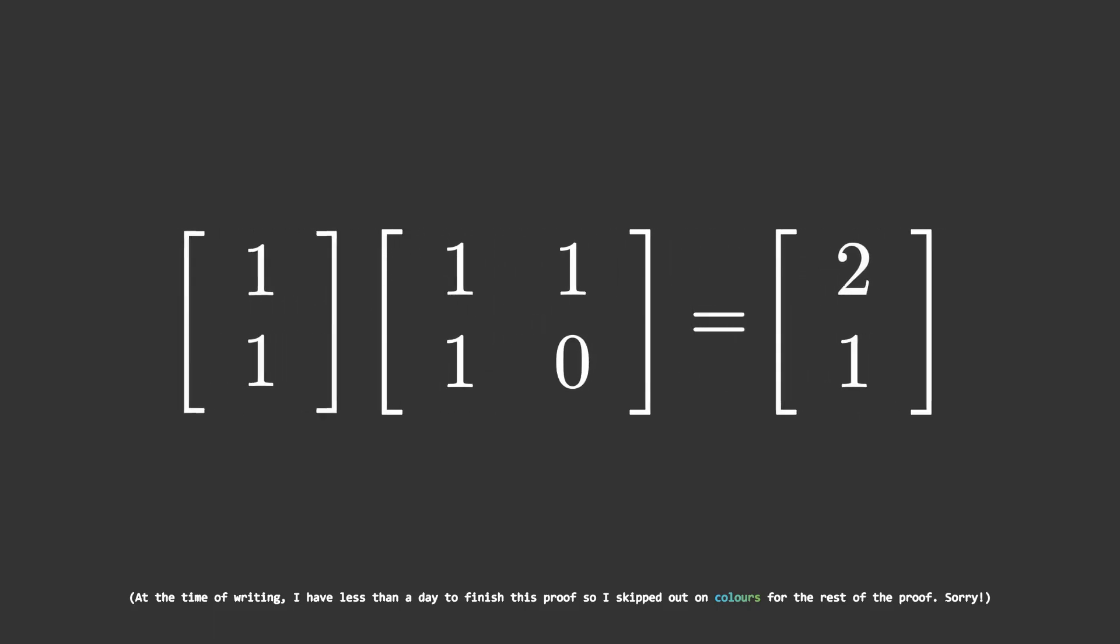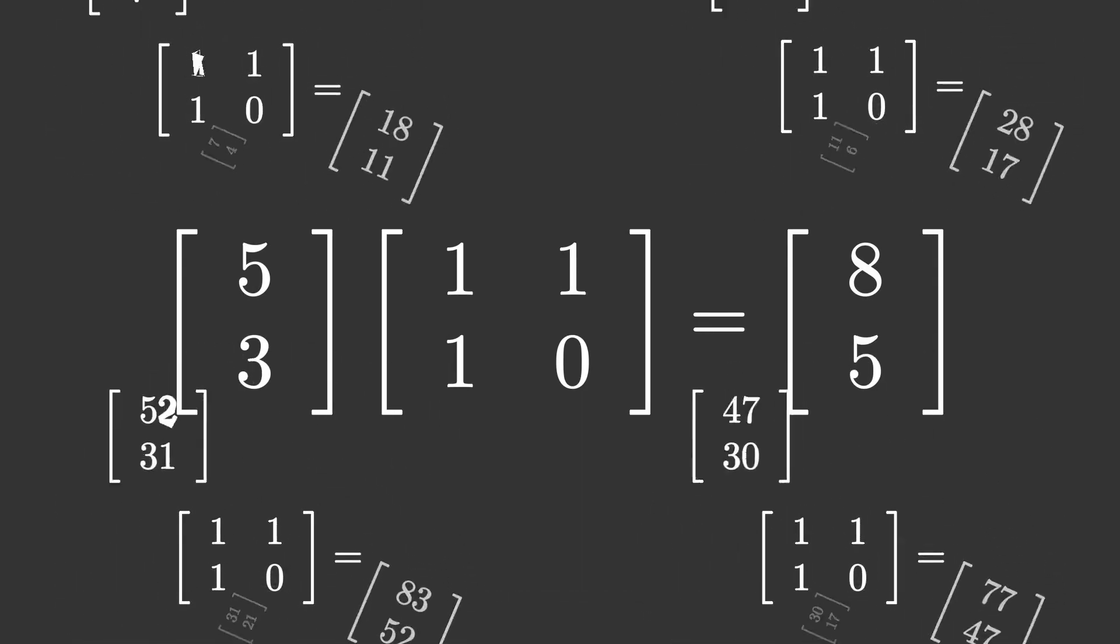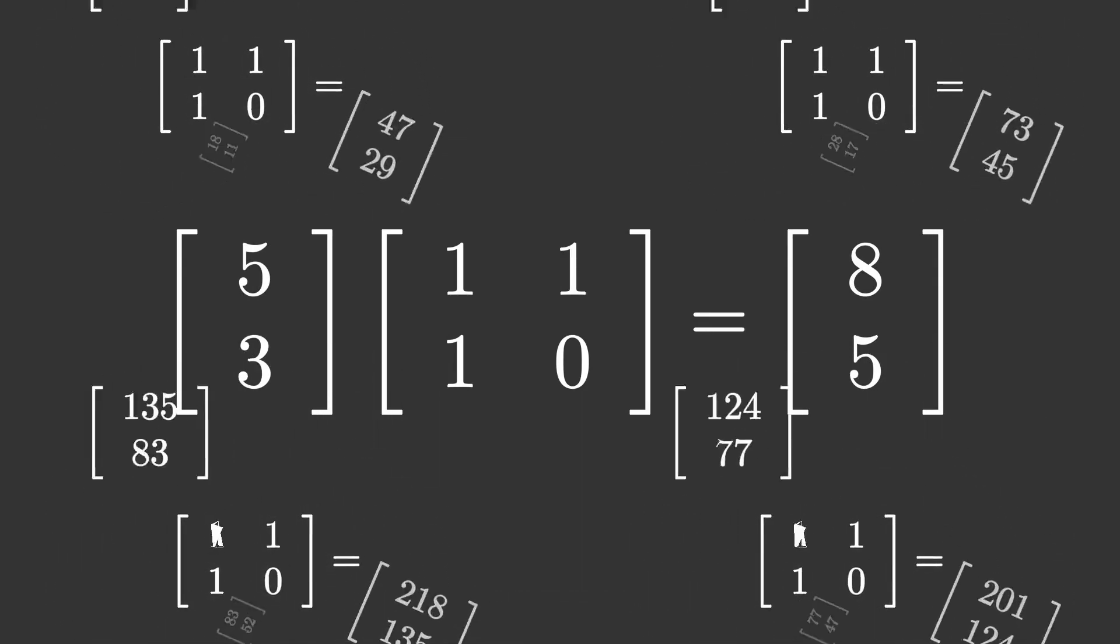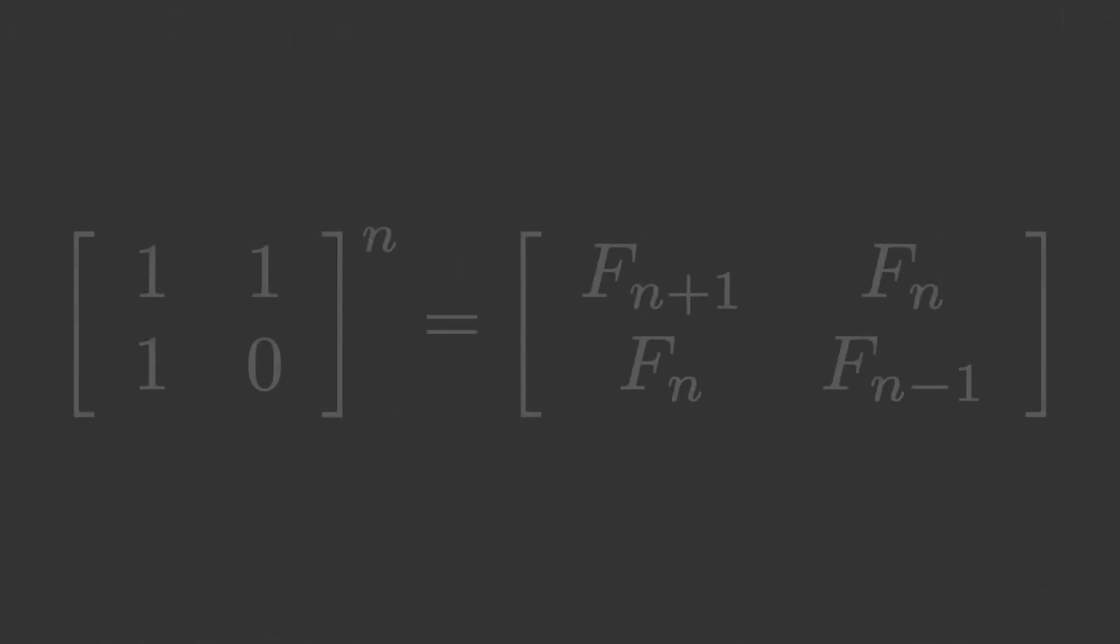Raising this to the power of n, or repeatedly applying it depending on your perspective, produces a Fibonacci sequence given a set of two starting numbers, and just by luck, or in reality a mechanic I don't have time to explain, ignoring the two starting numbers produces this matrix, which can be proven by induction.